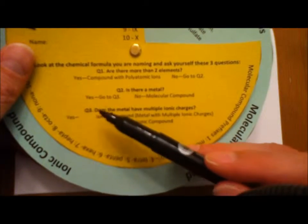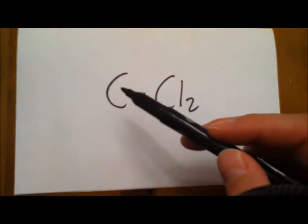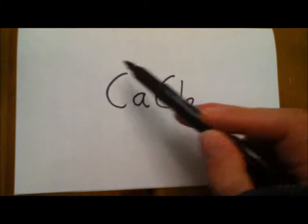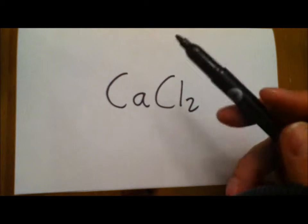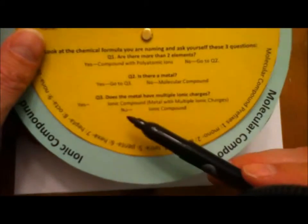Go to question three. Does the metal have multiple ionic charges? Well, that means you have to check your white periodic table, calcium. When you check calcium on the white periodic table, it does not get multiple charges. So our answer is no.